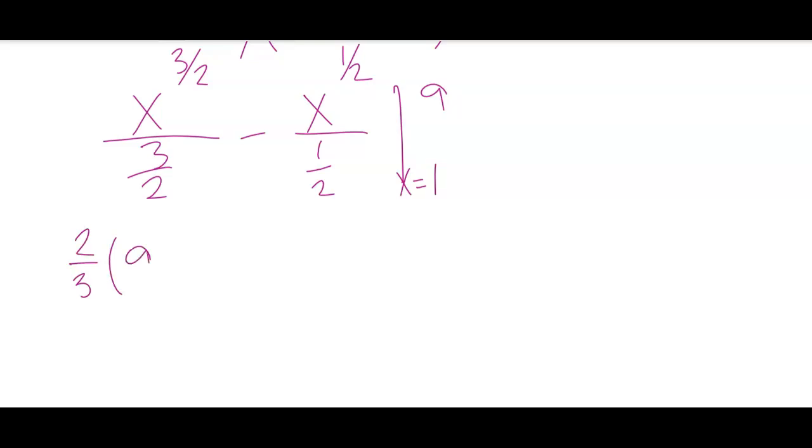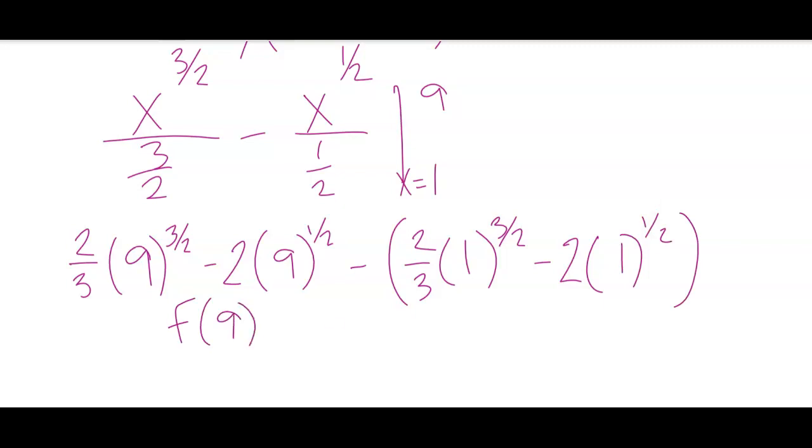When I divide by a fraction, that's the same thing as multiplying by the reciprocal. I'm going to plug in 9 to the 3/2 minus multiply by the reciprocal, 2 times 9 to the 1/2, minus big parentheses 2/3 times 1 to the 3/2 minus 2 times 1 to the 1/2. And again, this is my big F of 9 minus this is big F of 1, to use the Fundamental Theorem of Calculus here.